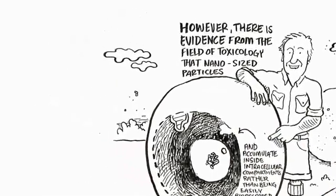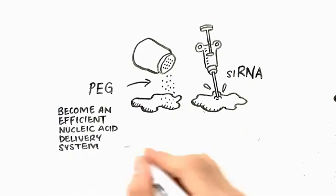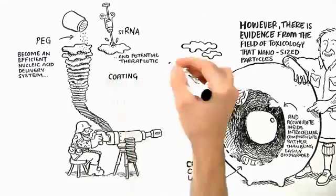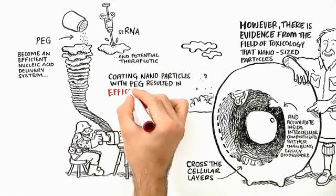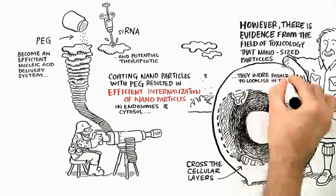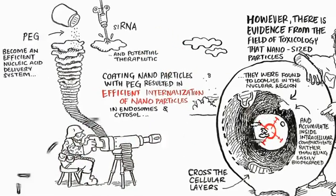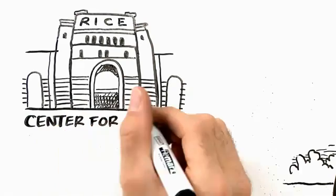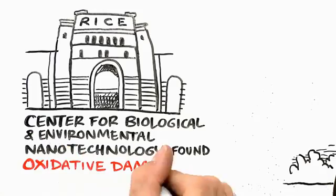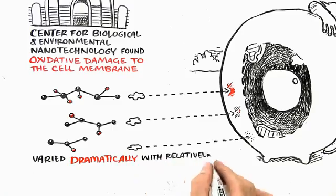Indeed, this has been seen as a benefit when nano-particles are combined with siRNA to become an efficient nucleic acid delivery system and a potential therapeutic. In 2006, Dr. Shana and his team showed that coating nanoparticles with PEG resulted in efficient internalization of nanoparticles in endosomes and cytosol. And they were found to localize in the nuclear region. Indeed, the coating of nanoparticles can be utilized for targeting. However, researchers at the Center for Biological and Environmental Nanotechnology at Rice University have found that oxidative damage to cell membrane varied dramatically with relatively minor changes to nanoparticle structure.